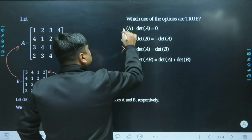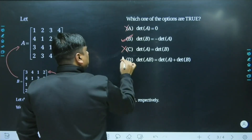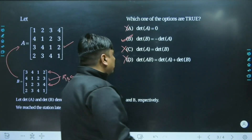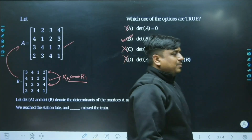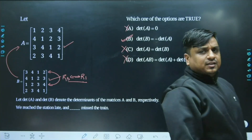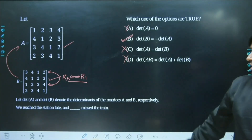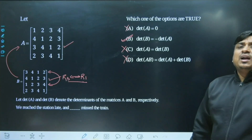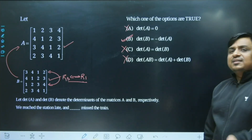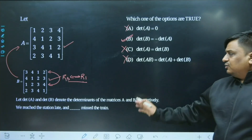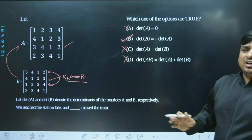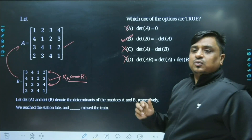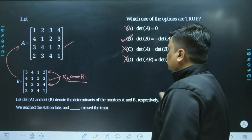So as far as this MSQ is concerned, it seems to be MSQ but only one answer is correct. The option stating det(A) = 0 is ruled out. Also, det(AB) is not equal to det(A) + det(B). Therefore, the best answer is option B: det(B) = -det(A).